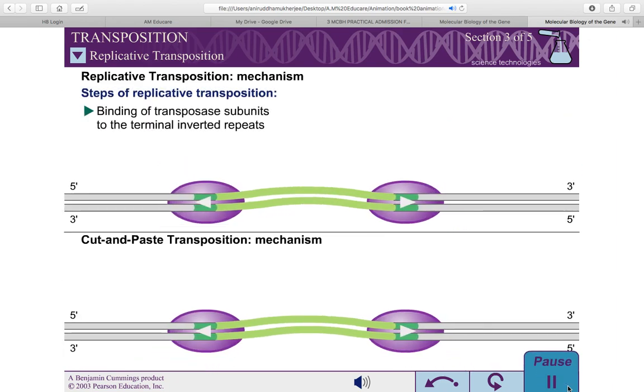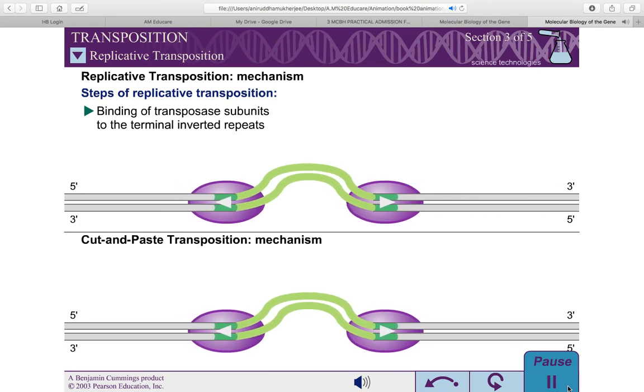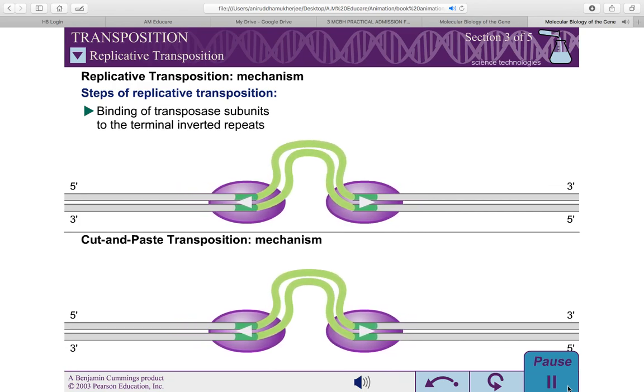Just as in cut-and-paste transposition, replicative transposition begins with the assembly of a transpososome.